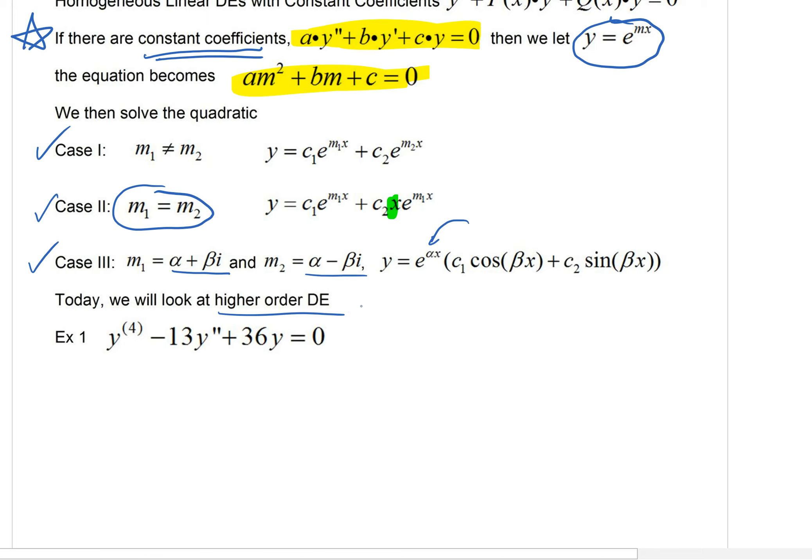And again, because we've got constant coefficients here, we can say, let's assume that y equals e to the mx is a solution. It's actually a very reasonable assumption, and it's always going to work as long as we have constant coefficients and a homogeneous differential equation here with zero on the right side. Here's what's really neat. This would then become m to the fourth minus 13m to the second plus 36 is equal to zero.